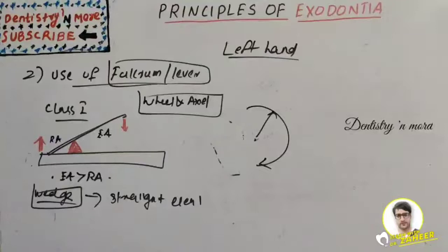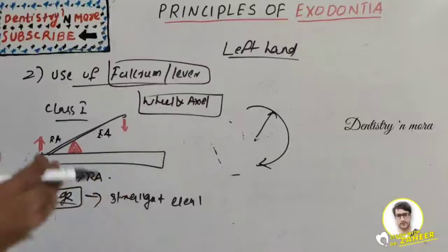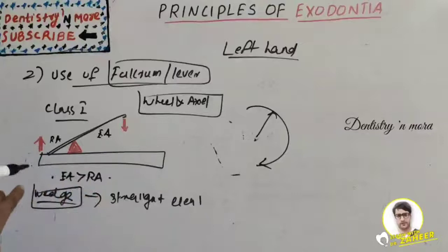Once the tooth is extracted, we need to irrigate the socket with normal saline or antiseptic solution, perform curettage of the socket to remove bony fragments or granulation tissue, smooth down sharp bony edges at the socket and inter-radicular bone, rinse the socket mouth with antiseptic solution, and suture only if required.